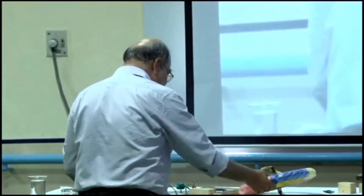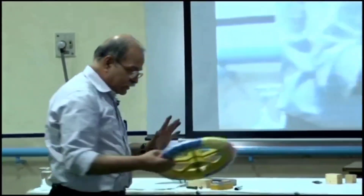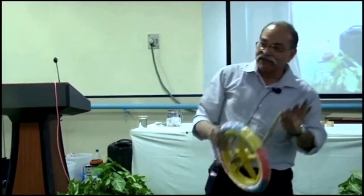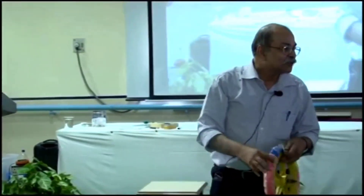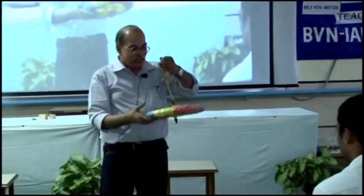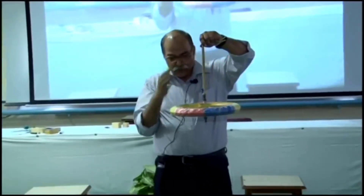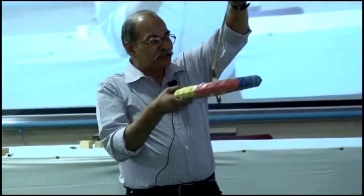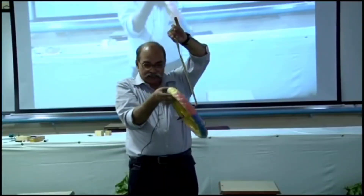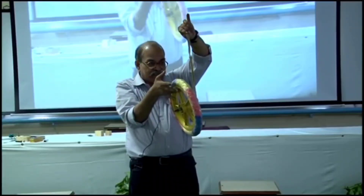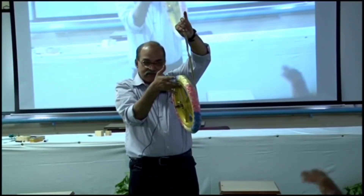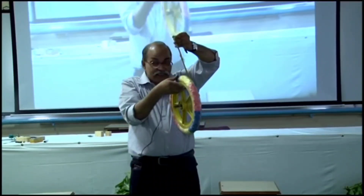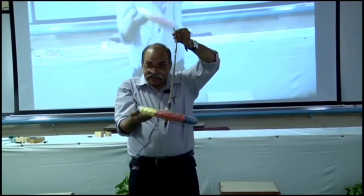I think I have done many things like that. I will just do this demonstration and leave it to you to analyze. This is a cycle wheel and there is a cloth tied to it. I will be leaving this right hand. What will happen to this disc? It will tilt. Is this a rotation?